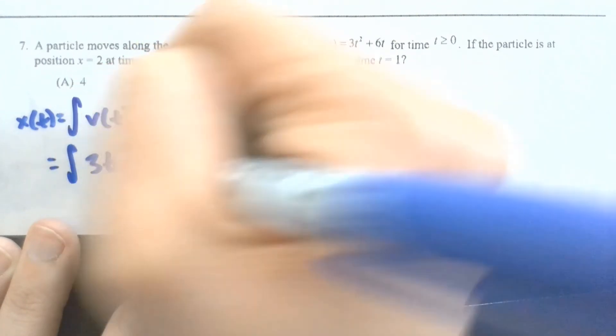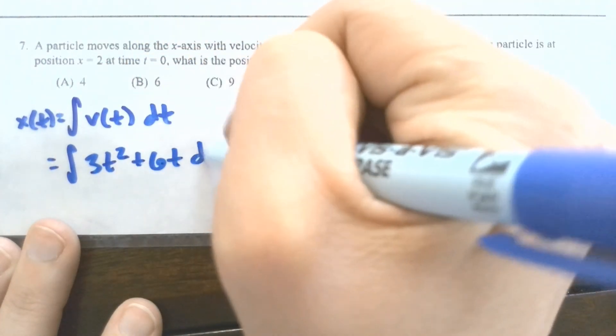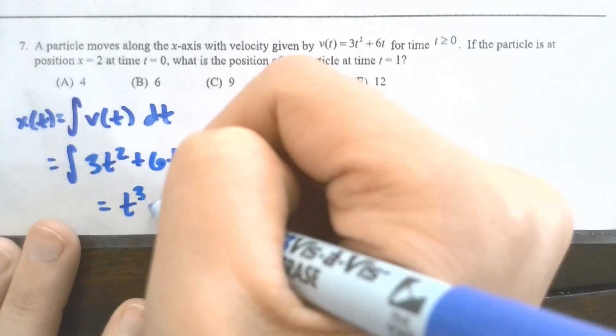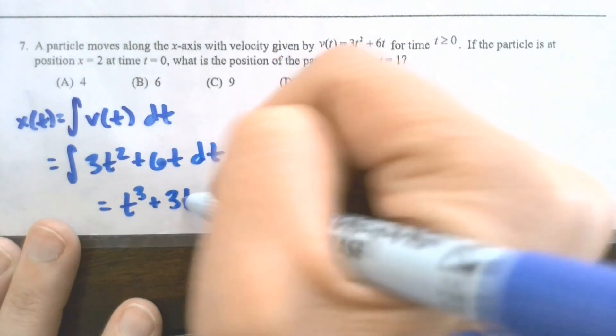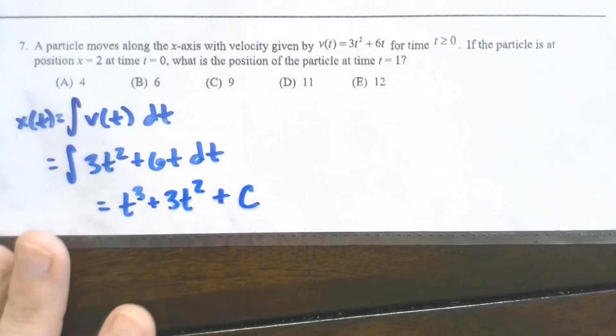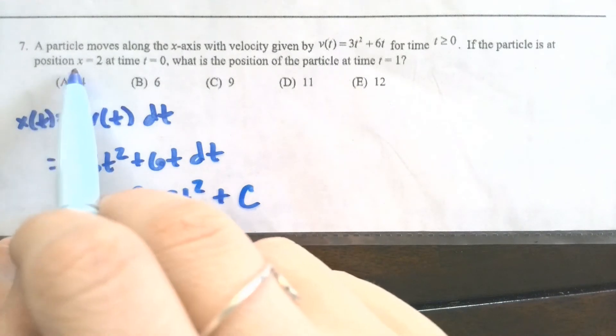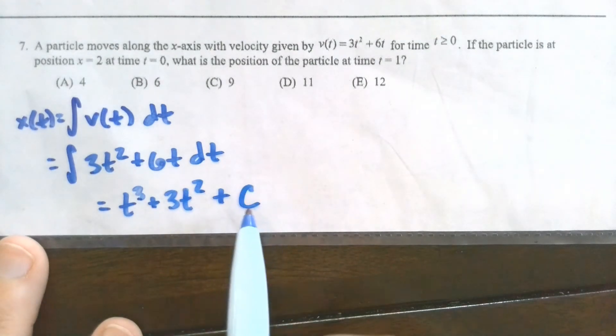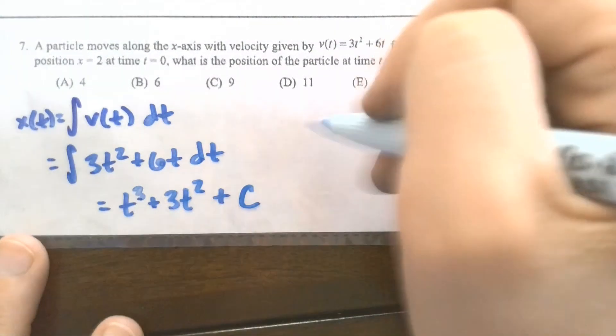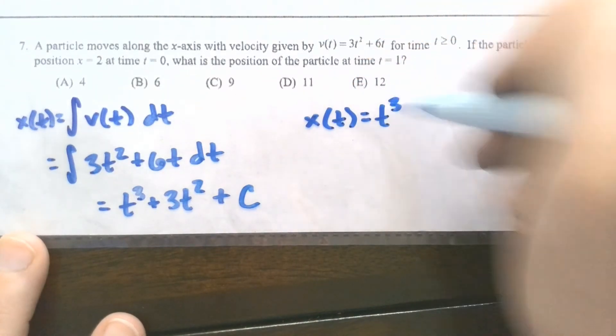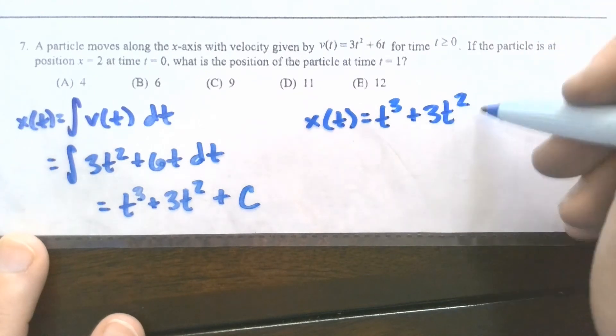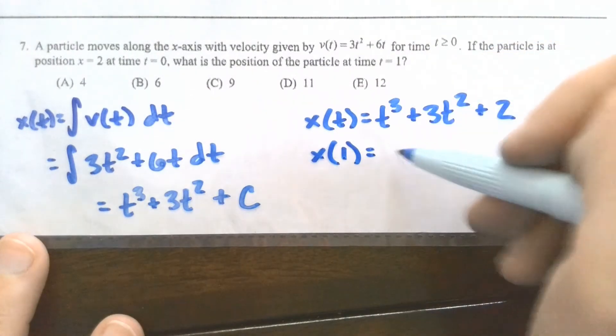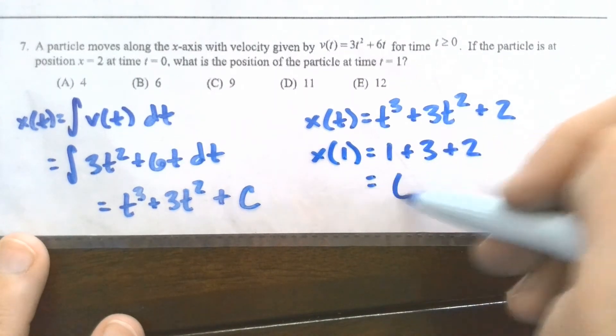When I go to integrate 3t squared plus 6t, I'm just using a power rule, so raising that a power and then dividing by 3, raising t a power and then dividing by 2, and then always that plus c. So this is where our initial condition comes in that at time t equals 0, so if I plugged in 0 for t, I'm just going to be left with c, so that means that c has to be 2. So my position is this t cubed plus 3t squared plus 2, and then we're looking for the position when t equals 1. So this would be a 1 plus 3 plus 2, which is 6.